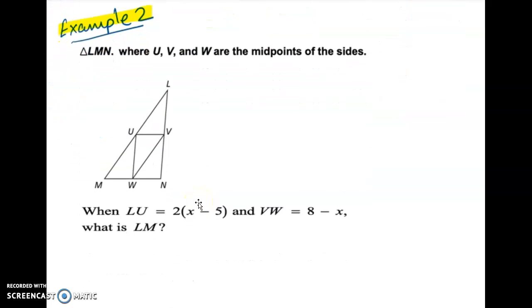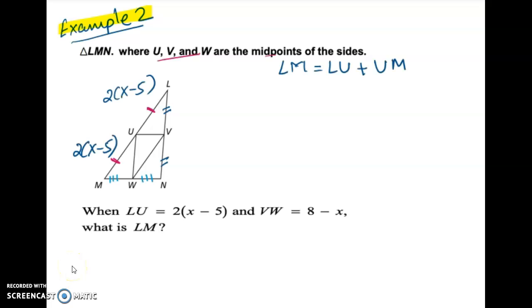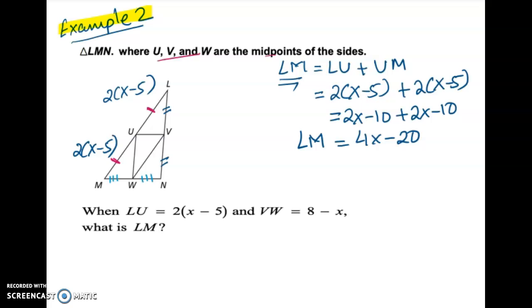Let's use this in one example. We are given that U, V, and W are midpoints. Because they are midpoints, MU equals LU, LV equals NV, and MW equals NW. LU is given as 2x minus 5, so MU is also 2x minus 5. Since LU plus UM equals LM, plugging in gives LM equals 4x minus 2. From the Triangle Midsegment Theorem, VW equals half of LM.